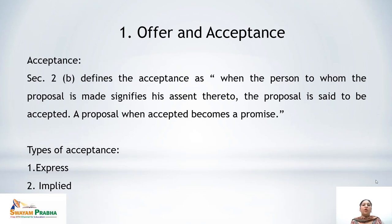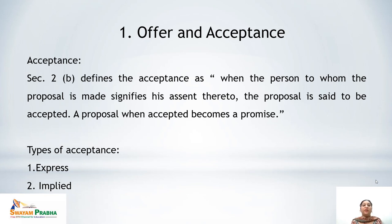Now we come to the second component: acceptance. Section 2(b) defines acceptance as when the person to whom the proposal is made signifies his assent thereto. The proposal is said to be accepted, and a proposal when accepted becomes a promise. The offer can be accepted only by the person to whom the proposal was made, and the person must give assent to the same thing for which the offer was made.